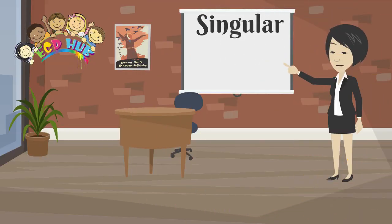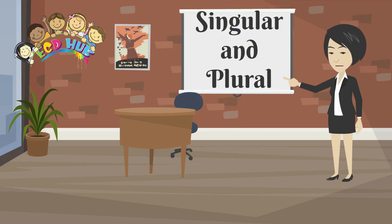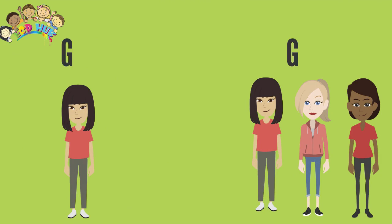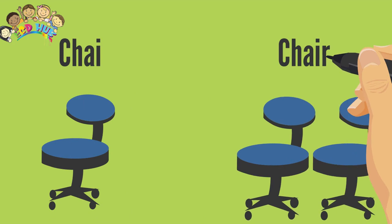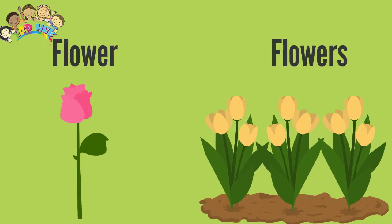Nouns can also be singular and plural. For example: girl, girls; chair, chairs; flower, flowers.